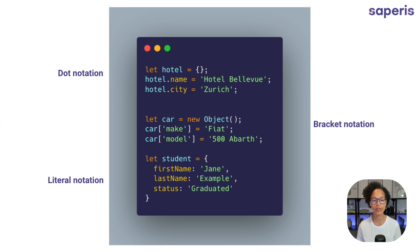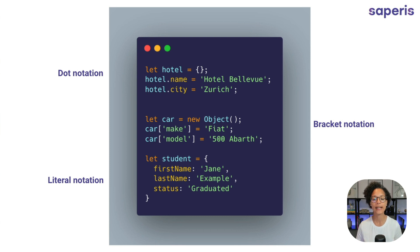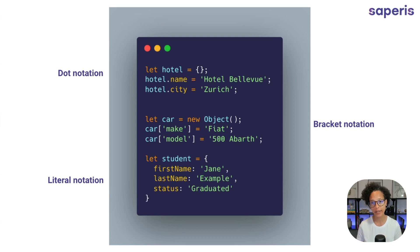Lastly we have the literal notation, which I tend to use when I'm creating an object and I know what the properties are going to be from the start. You just write your object name — so let student — then open up the curly brackets and write the properties. Importantly, we're not using quotation marks for property names; we use a colon, then the value in quotation marks, and separate the properties from each other with a comma. All three ways are valid, and which one you use is often a matter of preference. For me, the literal notation is what I usually prefer.